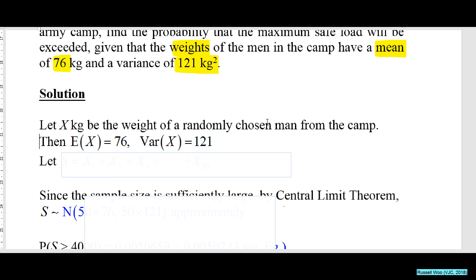X is not necessarily a normal distribution. The only thing they gave us was that X has a mean of 76, variance is 1.21. It is wrong to write X follows a normal distribution (76, 1.21), because nowhere in the question does it say that X follows a normal distribution.